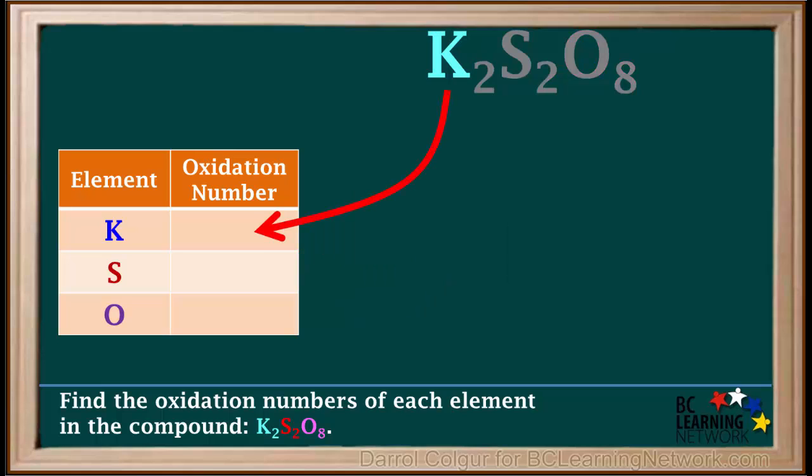Because K is an alkali metal or group 1 element, its oxidation number is positive 1. This is neither a peroxide nor a molecular oxygen, so the oxidation number of an oxygen atom is negative 2. We don't know what the oxidation number of a sulfur atom is, so we'll call it X for now.